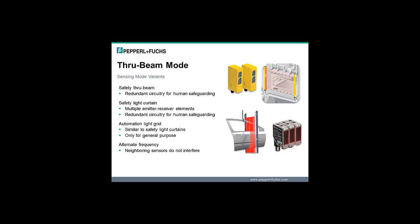Variants of through beam sensors include safety through beams which have redundant circuitry to meet the applicable criteria for human safeguarding, safety light curtains which have multiple emitter-receiver elements combined with redundant circuitry to meet the applicable criteria for human safeguarding, automation light grids that are similar to safety light curtains but only approved for general purpose applications, and alternate frequency models that ensure neighboring sensors do not interfere with each other.